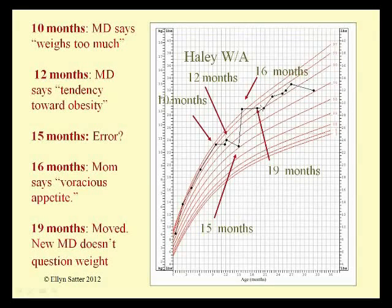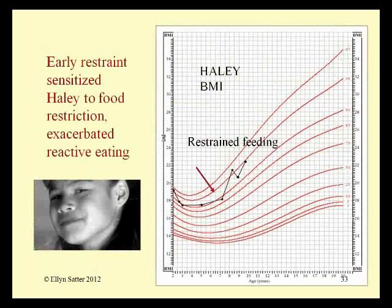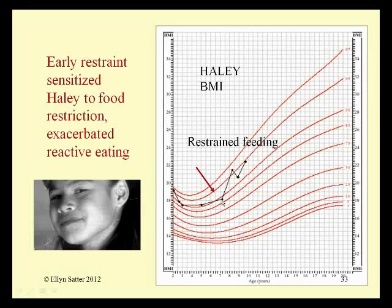At 19 months, Haley's situation improved. Her family moved to a new place, the new doctor didn't worry about weight, and her mother went back to school, so Haley's care and feeding was turned over to the father. As we see in the BMI chart, Haley's weight returned to the 90th percentile and stabilized. But at seven years, her mother again took over the feeding. Haley was diagnosed as being at risk of overweight — at the 90th BMI percentile — and began being fed in a restrained fashion again.